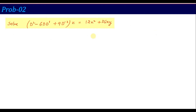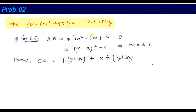Let us take another problem to better our understanding. The given equation is: (D² − 6DD' + 9D'²)z = 12x² + 36xy. This is clearly a homogeneous equation since all derivatives are of the same order. For CF, substitute D→M and D'→1: M² − 6M + 9 = 0, which factors as (M−3)² = 0, giving repeated roots M = 3, 3. The CF is therefore f₁(y + 3x) + x·f₂(y + 3x).